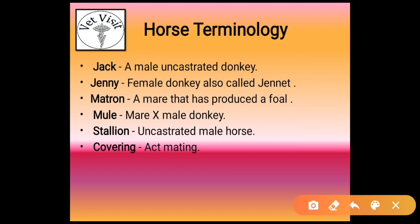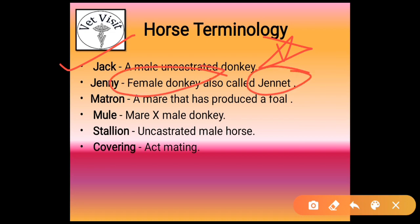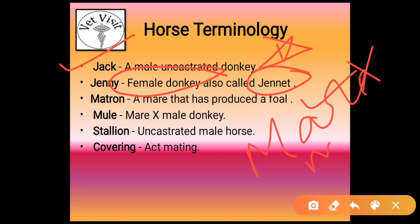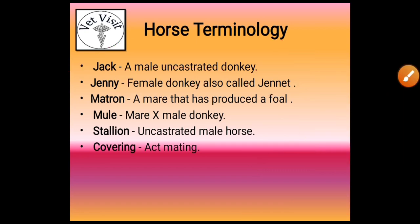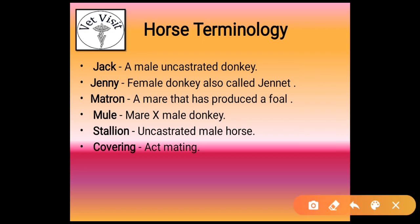Jack: an uncastrated male donkey is known as jack. Jenny: a female donkey is also called janet or jenny. Matron: a male that has produced a foal is known as matron. Mule: a cross of mare and male donkey is known as mule. Stallion: an uncastrated male horse is known as stallion. Act of mating is known as covering.